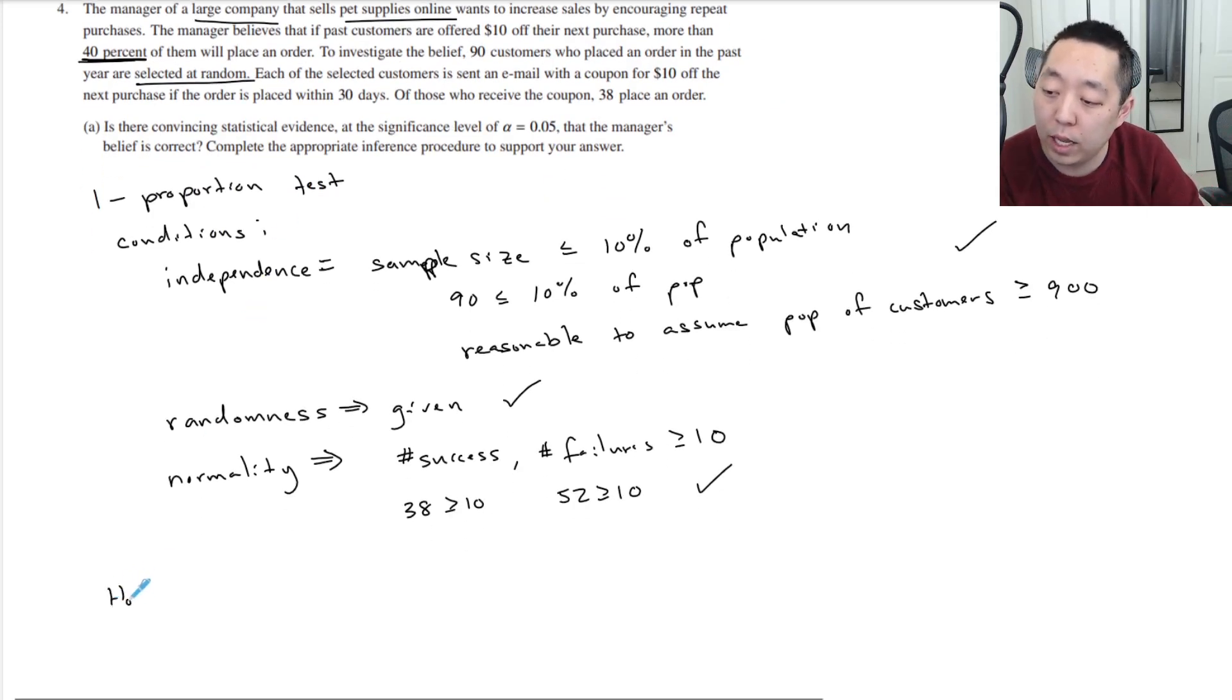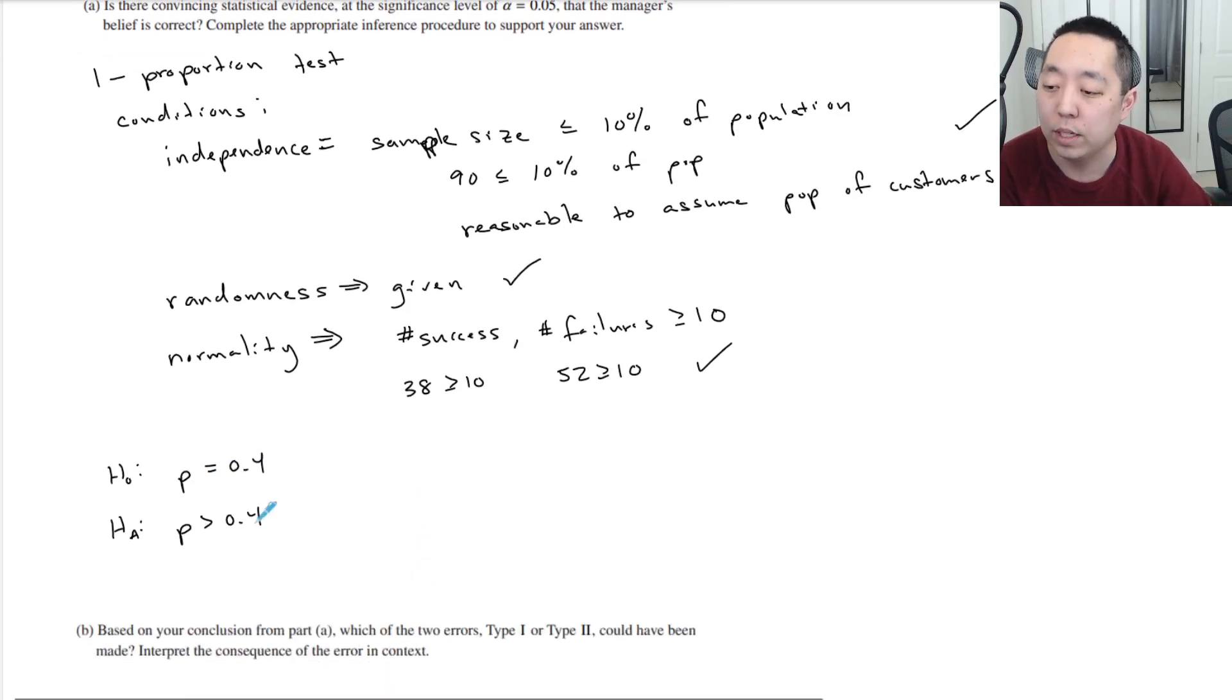So let's do our null hypothesis. He thinks that it's 40%, more than 40%. So he wants to prove that the proportion is greater than 0.4. And our null hypothesis will be that it is 0.4. Technically, 0.4 or less would be fine, but equal to 0.4 and greater than 0.4 is the hypothesis testing here.